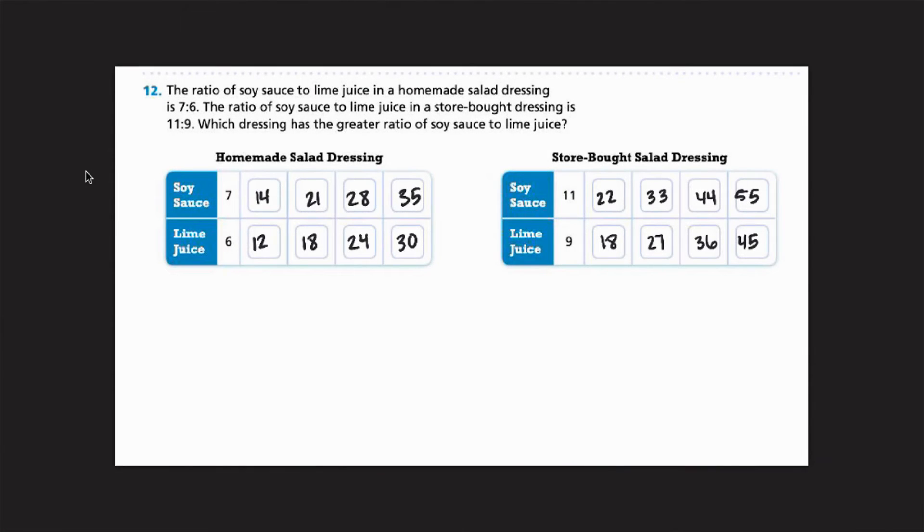Alright, and just like the last problem, we're going to compare the ratios. But we need to find out, what is it asking me? I really want to find out which one has a greater soy sauce. So I'm going to compare lime juices. So I'm going to look at my ratio table to find the one that has the same quantity. And I can see here, they both share 18. So those are the ones I'm going to be looking at.